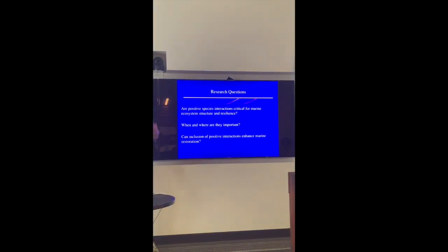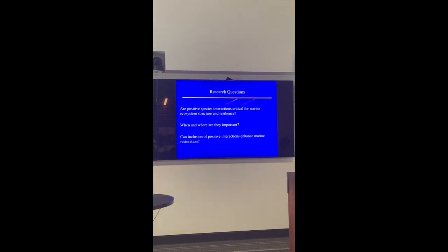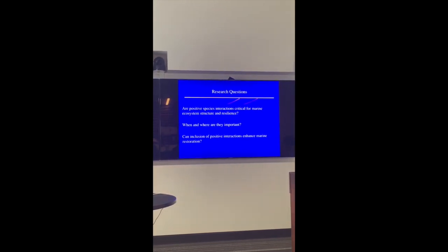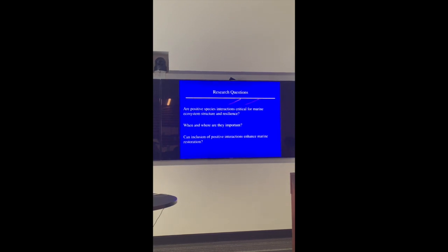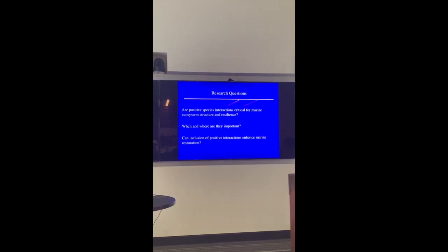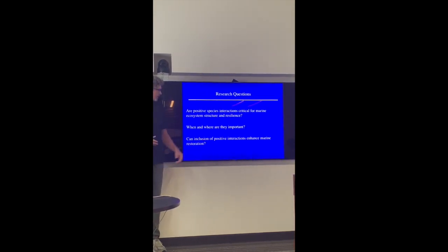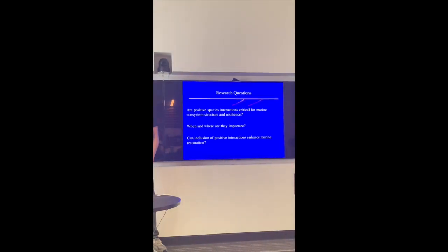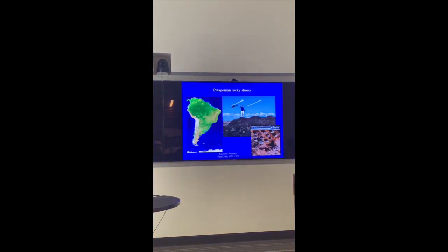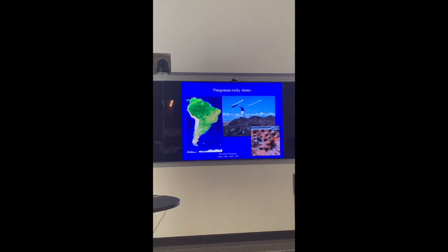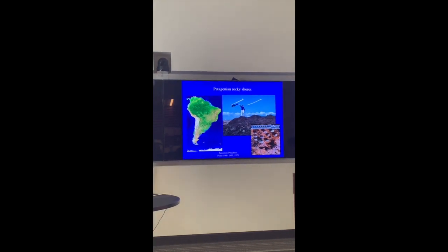So there are three questions I'm going to go over. Are positive species interactions critical for marine ecosystem structure and resilience? I'm just going to give you examples from what we have found in coastal systems. When and where are they important? Can we predict when positive species interactions should be important? And can inclusion of positive interactions systematically by design change the trajectory of increased success?